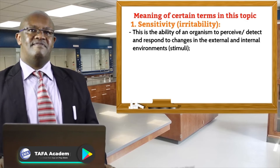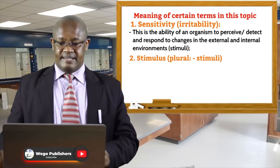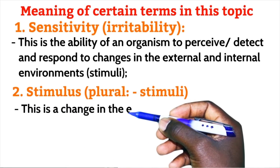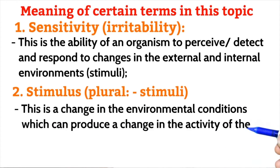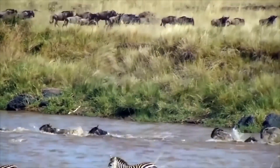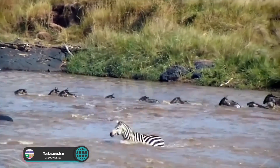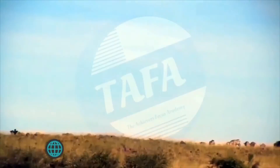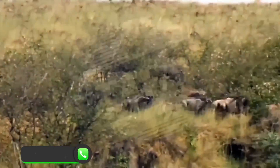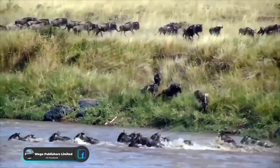The second important term is stimulus. The plural for stimulus is stimuli. A stimulus is the change in environmental conditions which can produce a change in the activity of the whole organism or part of the organism. A good example of a stimulus is a change in temperature — that change in temperature is the stimulus and it can cause an organism to change its activity.